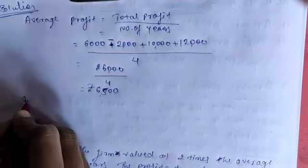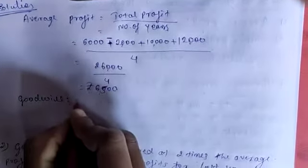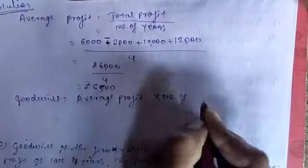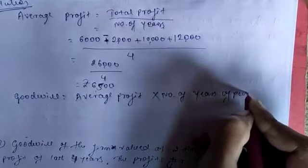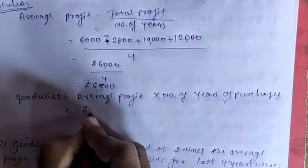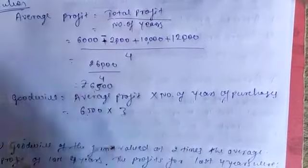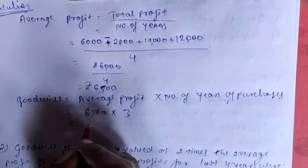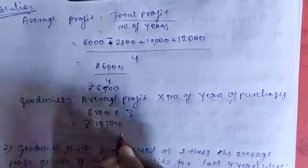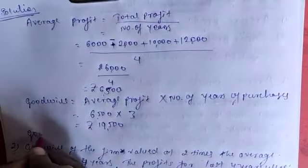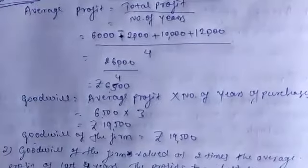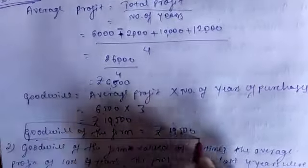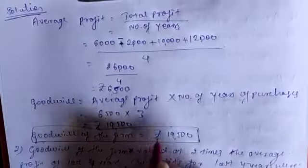Next step, calculate the goodwill. Goodwill = Average Profit × Number of Years of Purchase. Average profit is ₹6,500 and the number of years of purchase is 3. So goodwill = 6,500 × 3 = ₹19,500. The goodwill of the firm is ₹19,500.